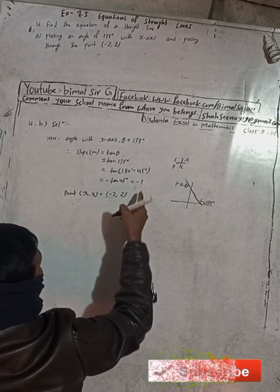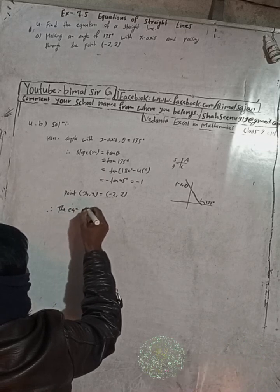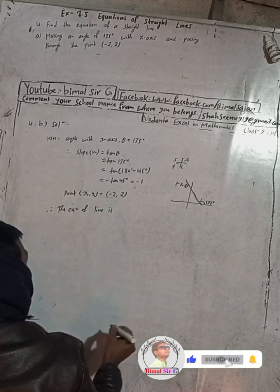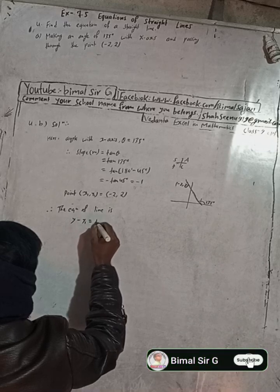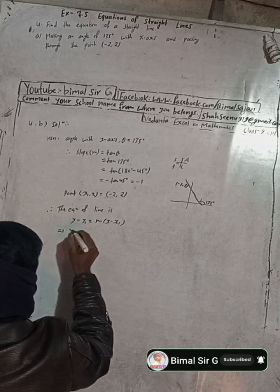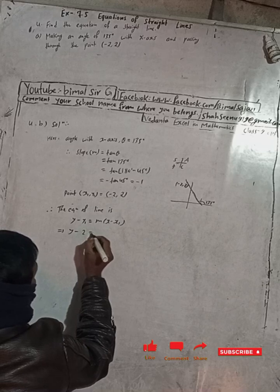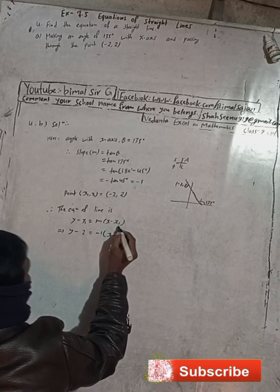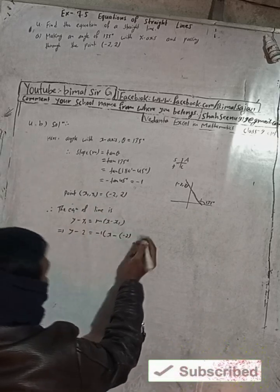So slope we have got is minus 1. Therefore the equation of the line is y minus y1 equals m times (x minus x1). Here y1 is 2, slope m is minus 1, and x1 is minus 2, so we put minus 2 in a bracket. Since the bracket might be confused with the negative sign, change it to a square bracket: y minus 2 equals minus 1 times [x minus (minus 2)].